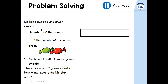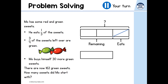This bar represents the red and green sweets at the start — that's what we're trying to work out. One-third of them is eaten, so two-thirds are left. Taking the remaining sweets: three-quarters of those left over are green, so one-quarter of them is red. Mo buys himself 30 more green sweets, so we add that 30 on. There are now 162 green sweets.